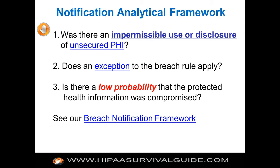Two components to that first question: impermissible use or disclosure and unsecured PHI. Unsecured PHI is protected information that has not been rendered unusable, unreadable, or indecipherable according to the protocols. Here are the protocols — go out to the NIST site, you can download them and have your tech staff read them. An impermissible use or disclosure is one that violates the HIPAA privacy rule.